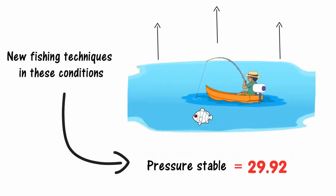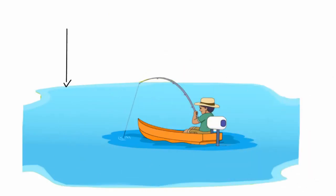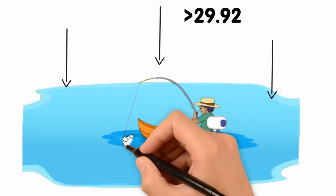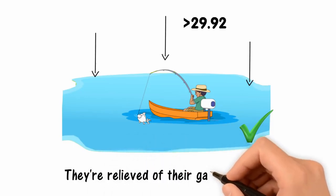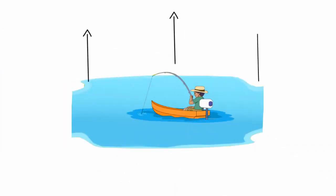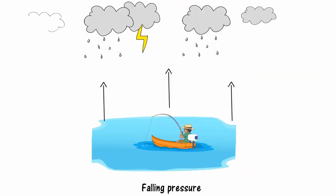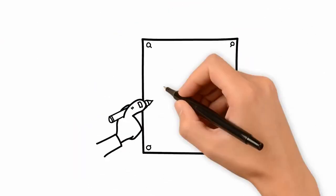Pressure above 29.92 and falling will be ideal feeding conditions with a bite near the surface - they're relieved of their gas and hungry. Use caution: falling pressure often signals poor weather.